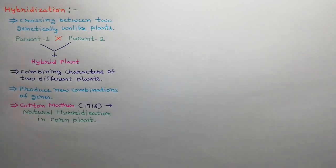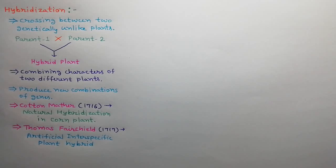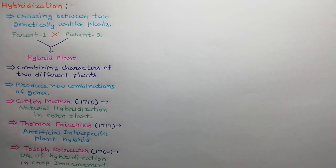The first natural hybridization was recorded by Cotton Mather in corn crop in 1716. The first artificial interspecific plant hybrid was produced by Thomas Fairchild in 1717.